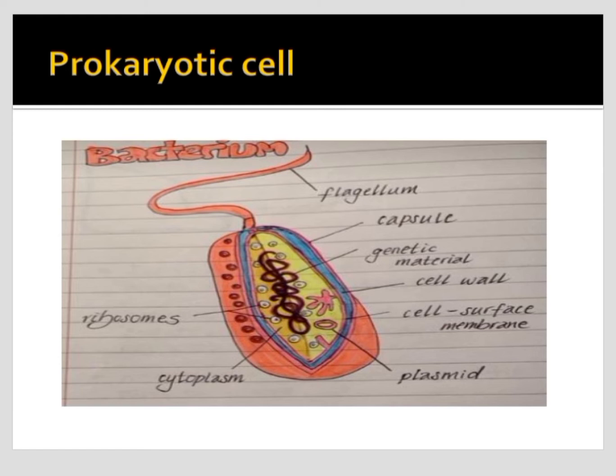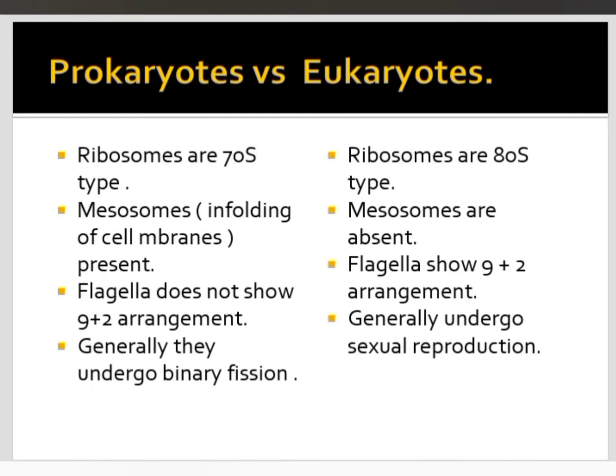The ribosomes of prokaryotes are 70S type, whereas in eukaryotes they are 80S type, based upon their density and size.